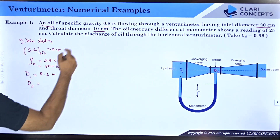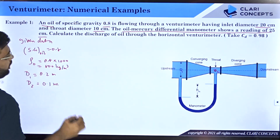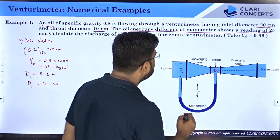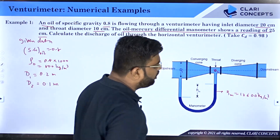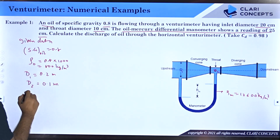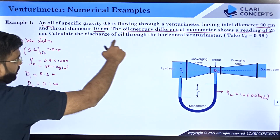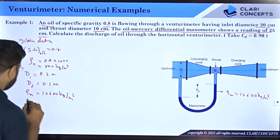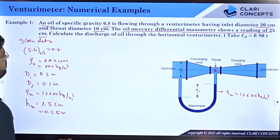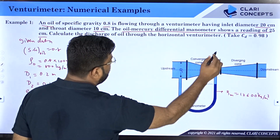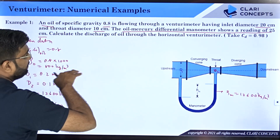The oil-mercury differential manometer shows a reading of 25 centimeter, so the manometric fluid is mercury. Density of mercury is 13600 kg/m³ — always remember this as it is often not given. The manometer reading h_m = 25 cm = 0.25 meters. cd is given as 0.98. We are asked to calculate the actual discharge Q of the oil flowing through the horizontal venturimeter.